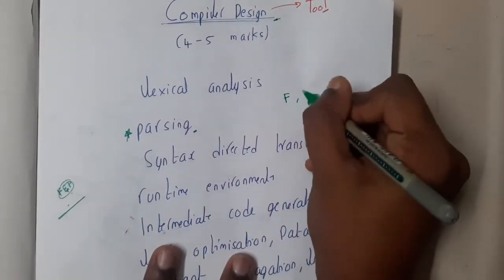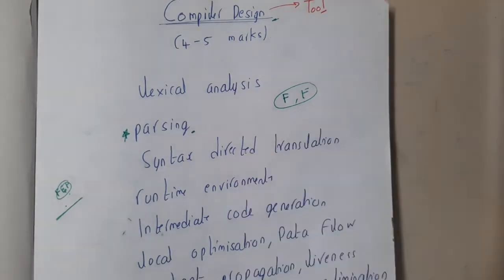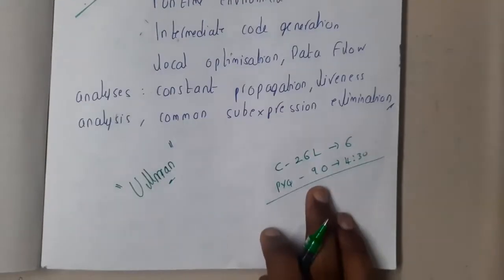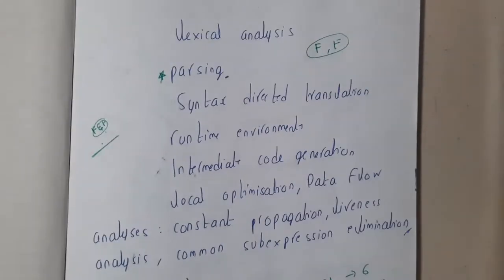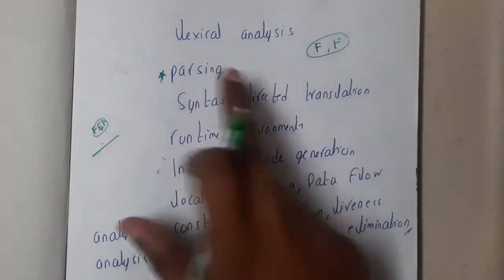There are around 10 to 20 questions directly based on first and follow. So to be clear, from 90 questions, if 10 or 20 are in first and follow, how valuable it is. Please practice all the things.